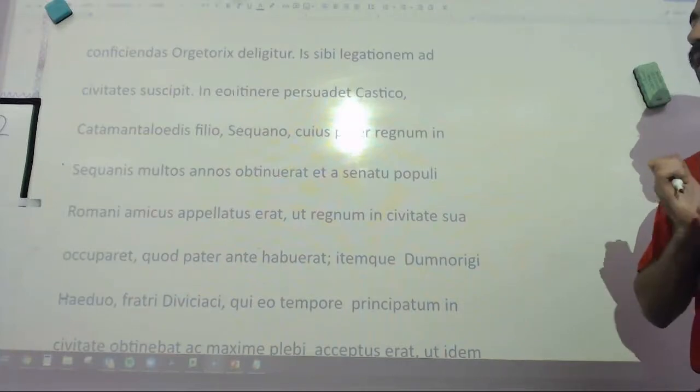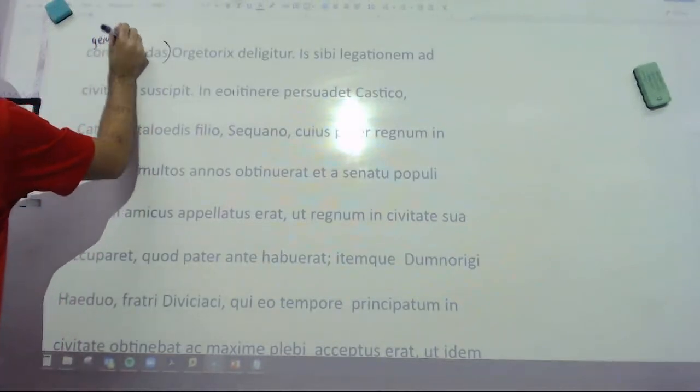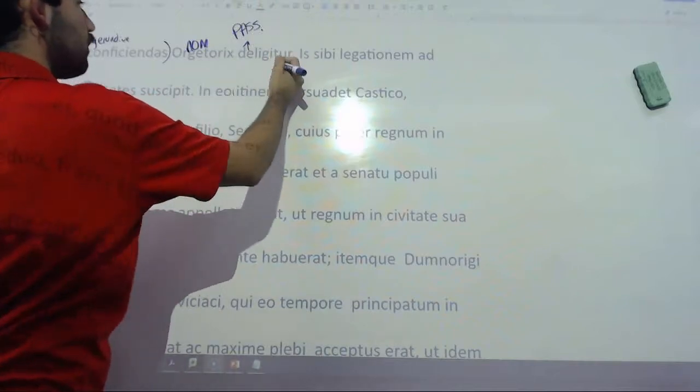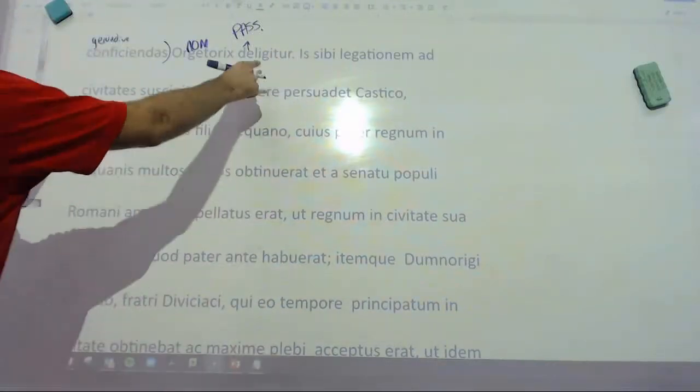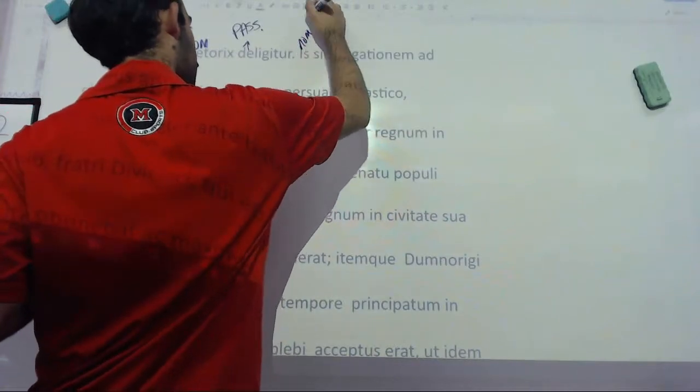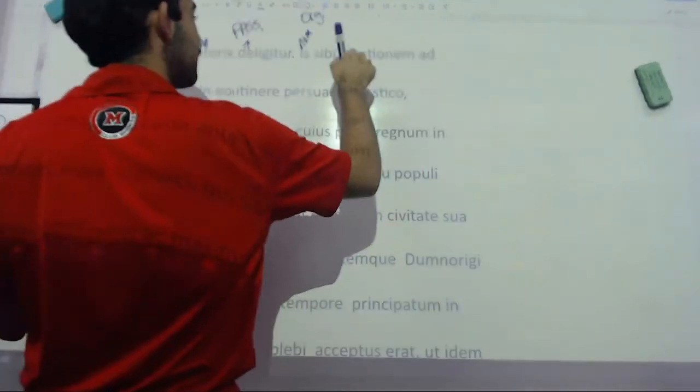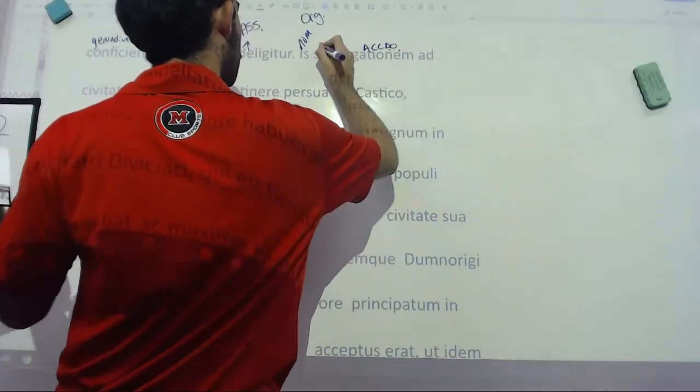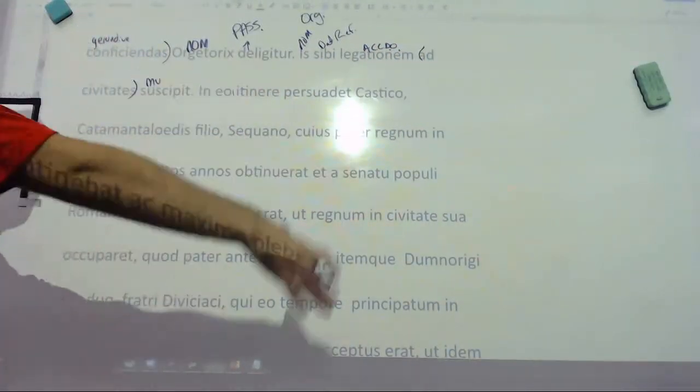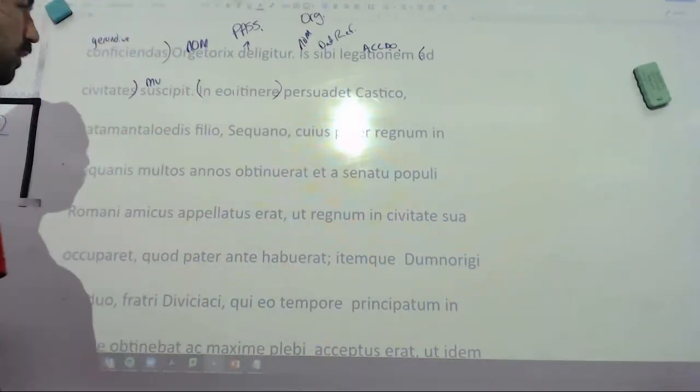And now moving on into this next part, ad eas res conficiendas, for the purpose of finishing these things, same deal, that gerundive. Consituunt isn't the subject anymore, now it's Orgetorix which is nominative, and this is a passive form of deligo. Deligo is where we get the word delegate, and delego is to choose. Orgetorix is chosen for the purpose of finishing these things. So they choose him as their leader. He, this is nominative, and that's the word Orgetorix. He took up legationem, an embassy for them, this is a dative of reference, to the states. So in other words here, he's going to go and make peace with people. Ad plus the accusative, to the states. In eo itinere, on this journey, on that journey, he, Orgetorix, persuaded.